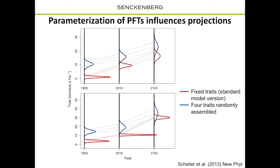We simulated vegetation at two different study sites in the savannah areas and looked at tree biomass. The red distributions show simulated biomass using fixed traits or standard parameterization, while the blue lines show an experiment where we used four traits assembled randomly from a uniform distribution with the same mean value as the default. There is a really huge difference in biomass and variance between replicate simulation runs, showing that flexibility in traits produces quite different responses.